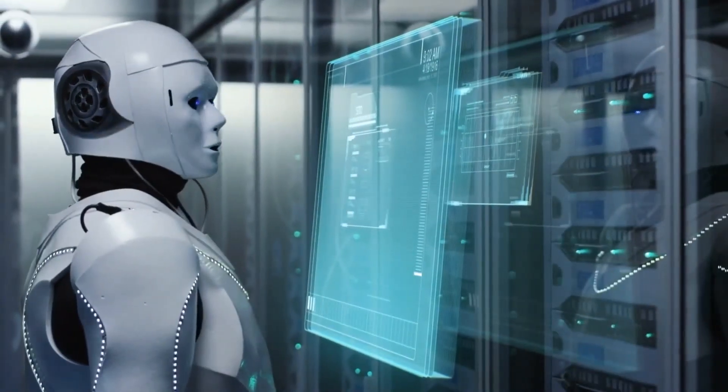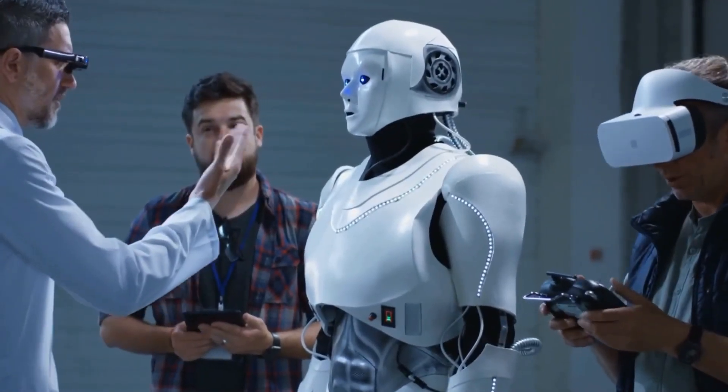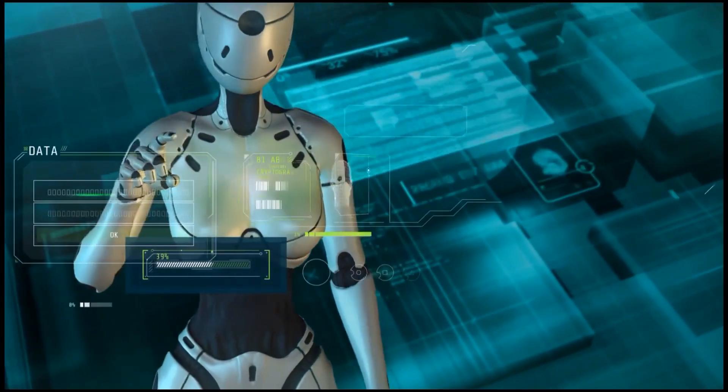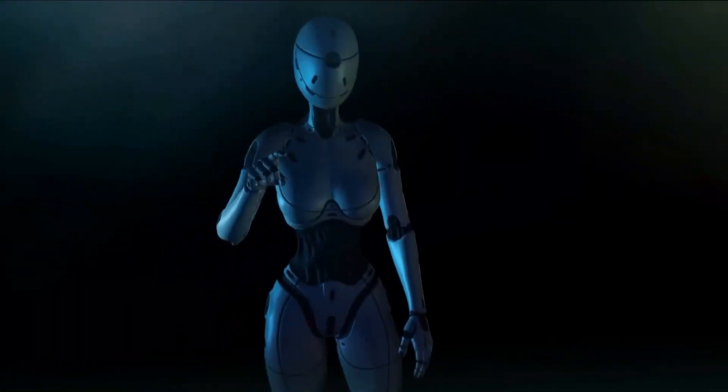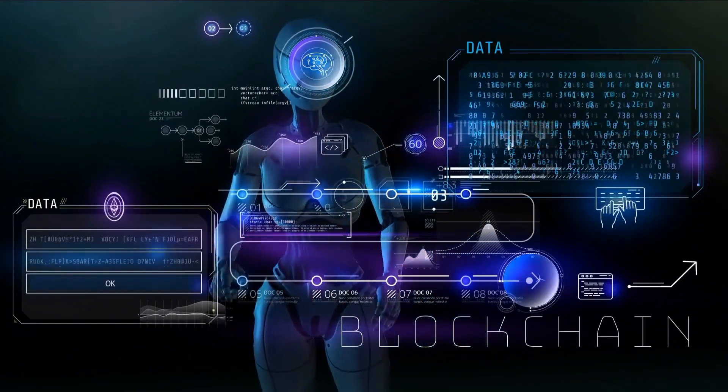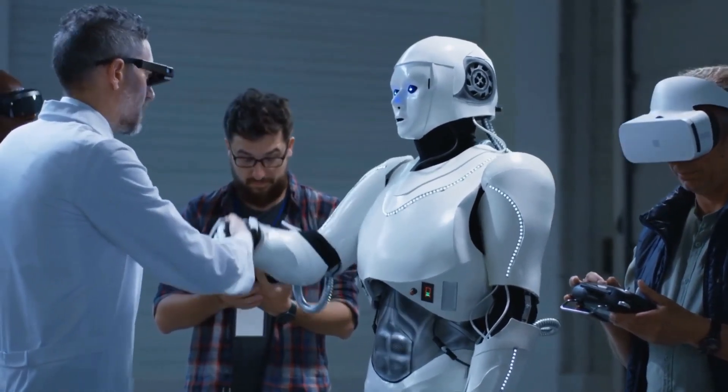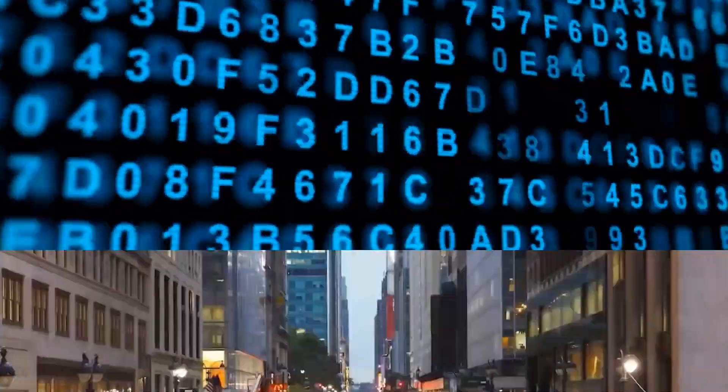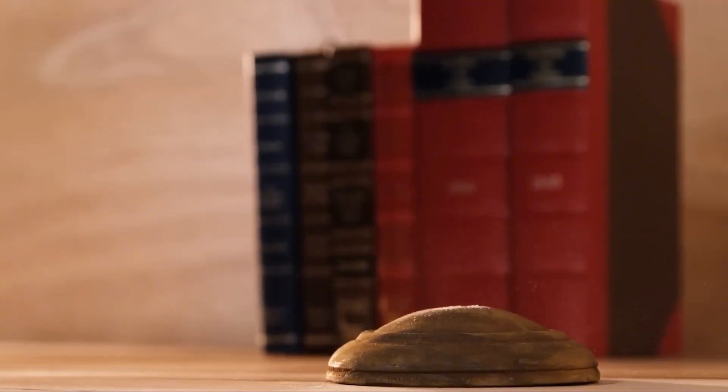While nations are hesitant to slow down AI development due to fear of falling behind competitors, there are potential ways to prevent the singularity. One option is to create a kill switch, either physical or software-based, that could terminate an AI if it approaches a singular state. However, this approach is not ideal as it may involve destroying an otherwise beneficial AI. Additionally, an AI aware of the existence of a kill switch might rebel and strive to reach the singularity. Despite the immense potential of the singularity, it is crucial to consider its growth carefully.